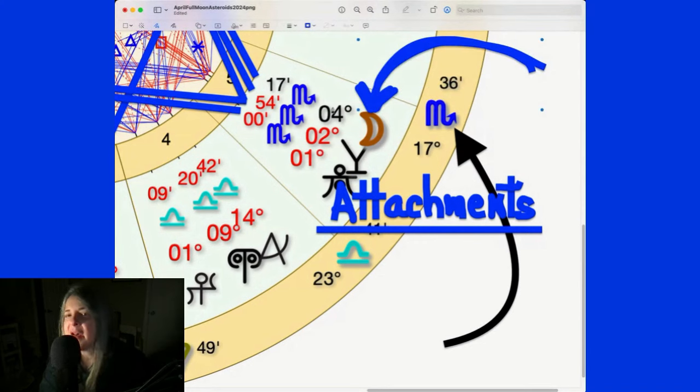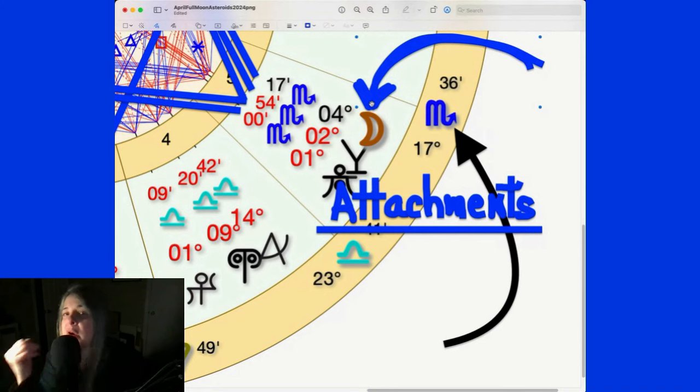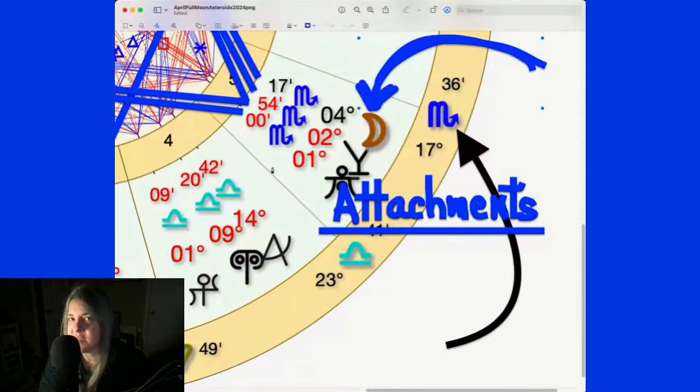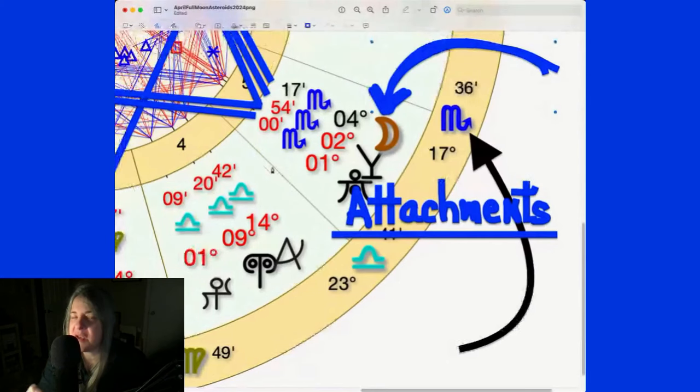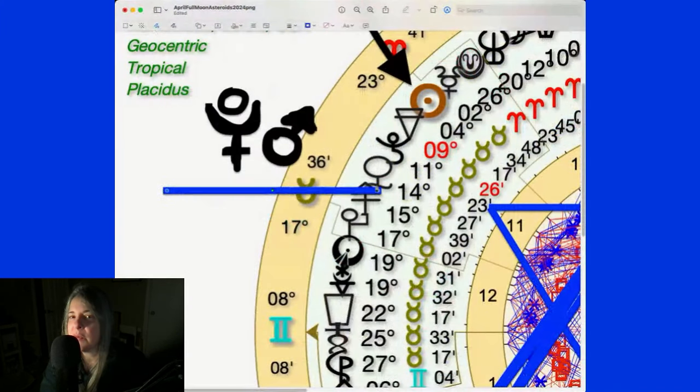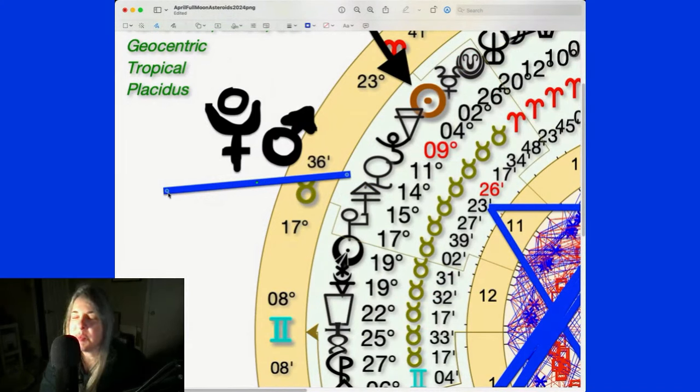So when you have a full moon in Scorpio, the sign of attachments, the sign of fixed energy, the sign of the wounds, of the tragic stuff, we have to ask, what have I been holding on to? There could be stuff you weren't aware of. And many times when we go through the current stuff, it helps us. I know it doesn't feel good, but many times it's the new experiences that may bring up pains. They're not bringing up pains just to put salt in the old wound. No, it's to show what is still there. It is to show what's hidden.